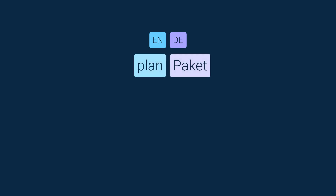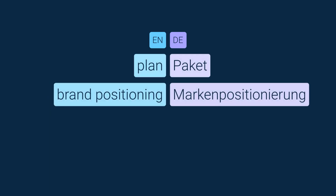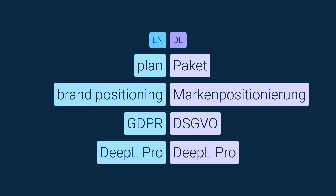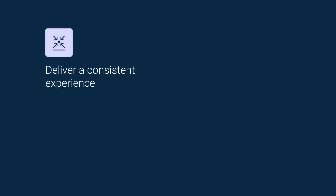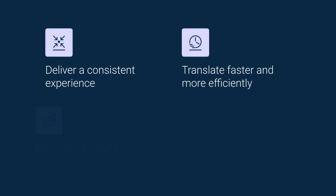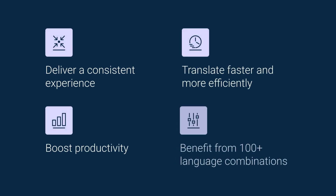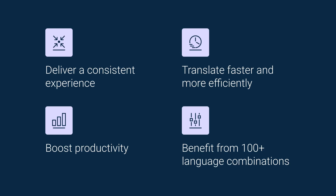With glossaries, you can set specific translations for certain words or phrases, like technical terms, product names, and more. This means you'll always deliver a consistent, more efficient translation experience that boosts productivity. And with over 100 language combinations available, you can really accelerate your global communication.